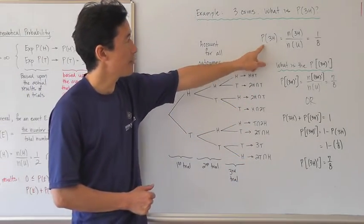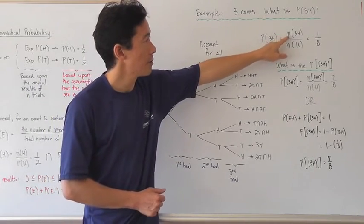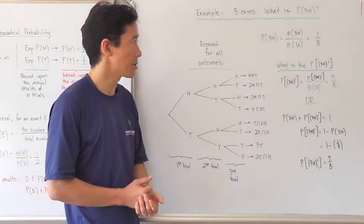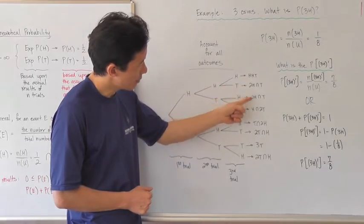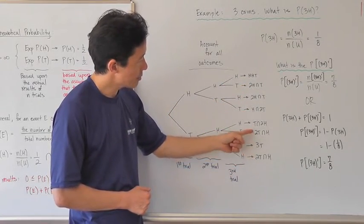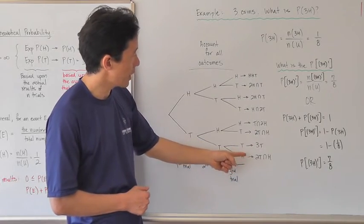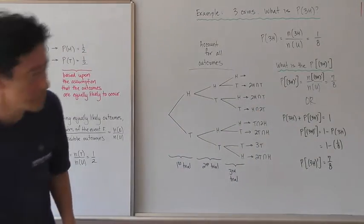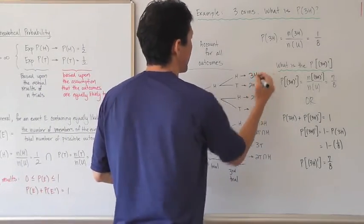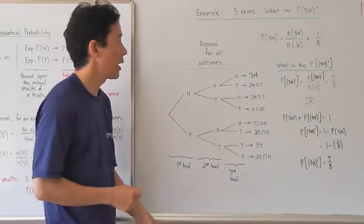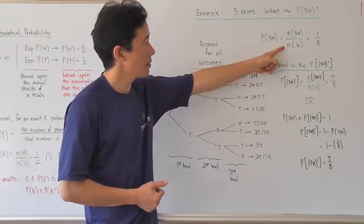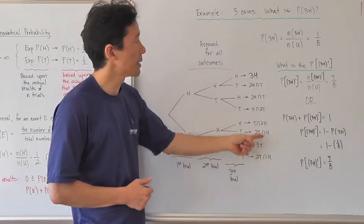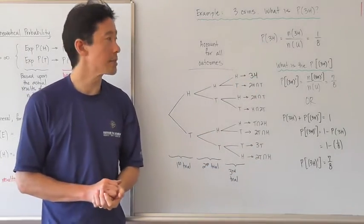To find the probability of getting three heads, that's the number of three-head outcomes divided by the total number of outcomes in the universal set. Going through all the outcomes, there is only one situation where you get three heads. The total number of outcomes is eight, so the probability of getting three heads is one over eight.